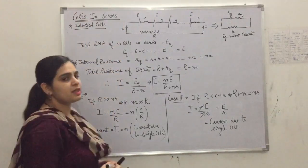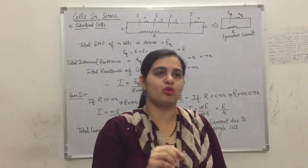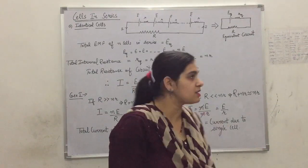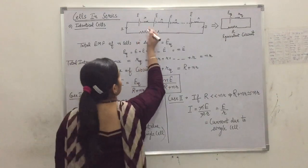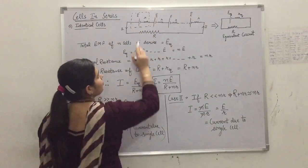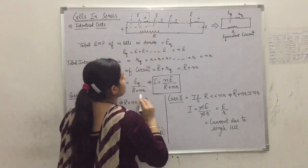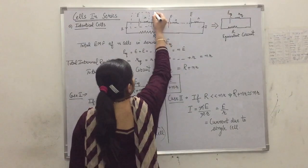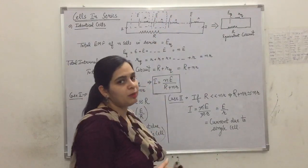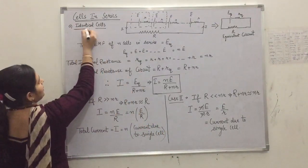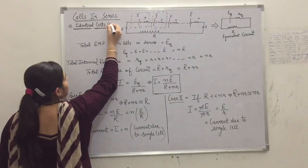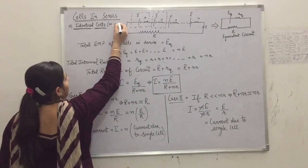First of all, we have to suppose that we have identical cells connected in series. As you can see, this is our first cell C1, which we have supposed has EMF value E and internal resistance r. This is our second cell, which also has EMF E and internal resistance r. We are connecting identical cells in series, and we have supposed there are small n such cells.